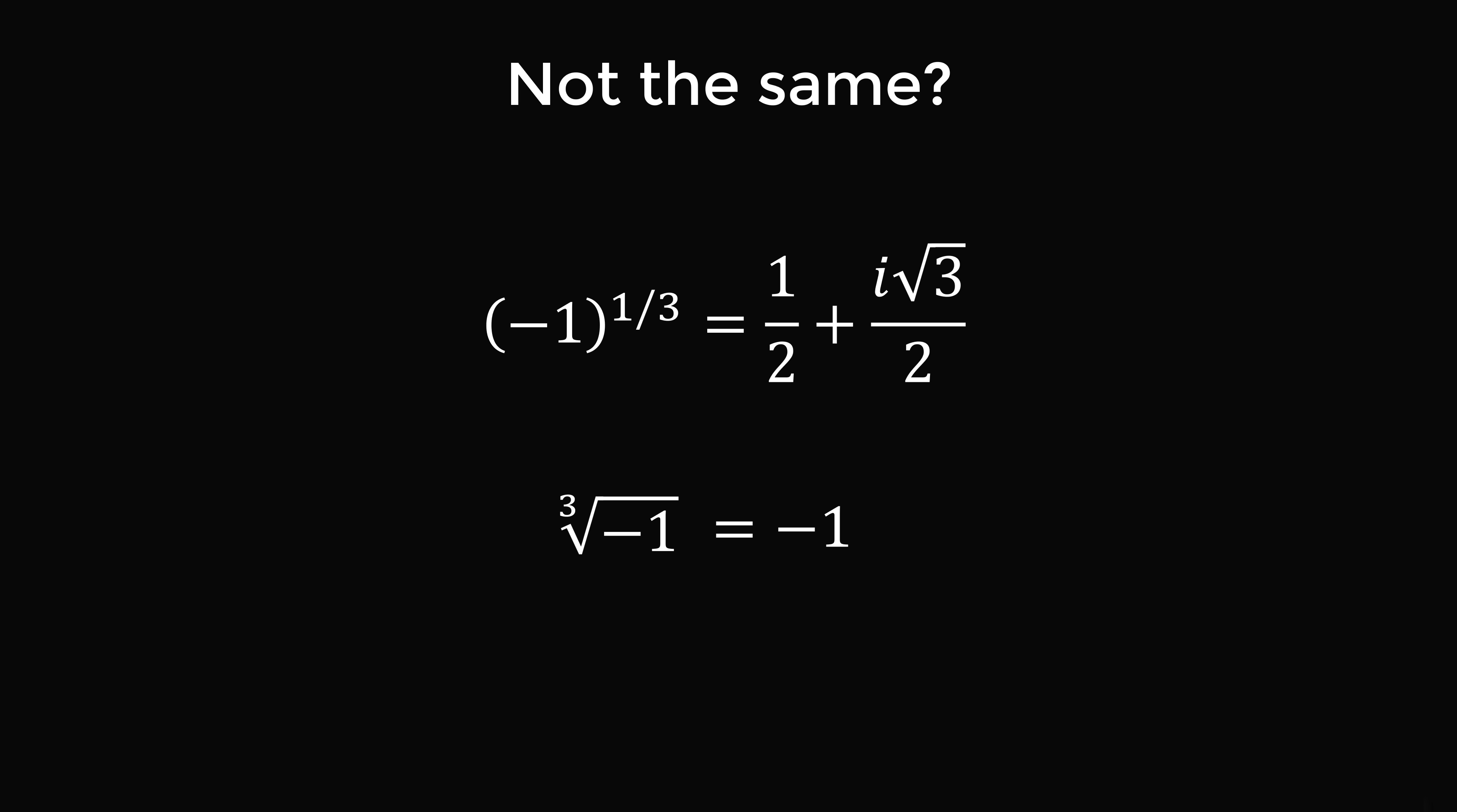In order to understand this, we'll take a step back. Consider the equation x squared is equal to 4. There are two solutions to this equation. x is equal to 2 is a solution because 2 squared is equal to 4. x is equal to negative 2 is also a solution because negative 2 squared is also equal to 4.